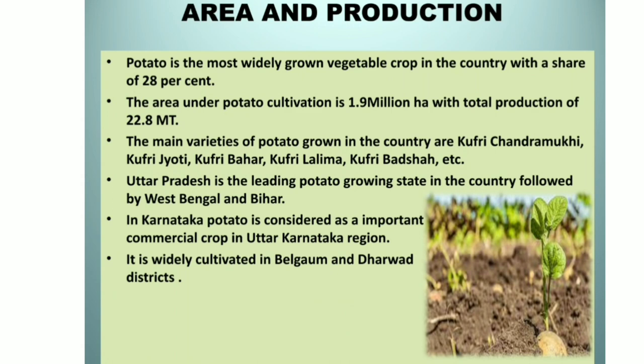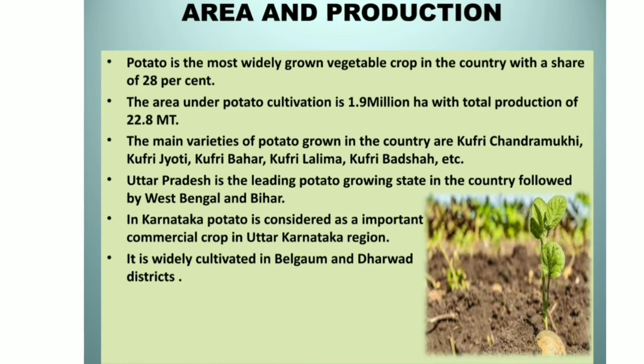Area and production: potato is the most widely grown vegetable in the country with a share of 28%. The area under potato cultivation is 1.9 million hectares with total production of 22.8 million tons. The main varieties grown are Kufri Chandramukhi, Kufri Jyoti, Kufri Bahar, Kufri Lalima, Kufri Badshah, and many more. Uttar Pradesh is the leading potato growing state, followed by West Bengal and Bihar. In Karnataka, it is widely cultivated in Belgaum and Dharwad districts.